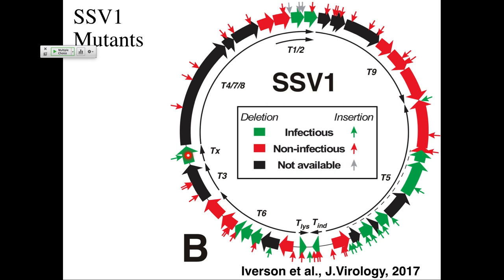For the directed mutagenesis, we did deletions of specific genes shown in green and red. We found that some genes can be deleted with the virus remaining perfectly infectious, while deleting others renders it non-infectious. We also did insertional mutagenesis — random insertions, though whether they're truly random is an open question. Anything green is functional when you make an insertion there; red is non-functional. About half the genome is red or has red arrows, and about half is green or has green arrows.